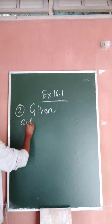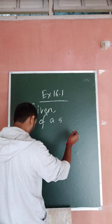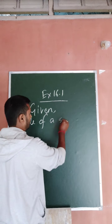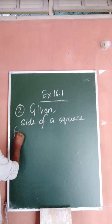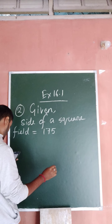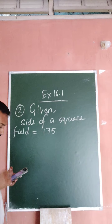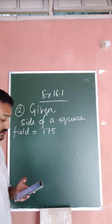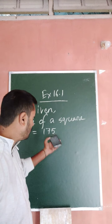Given: side of a square field is equal to 175. So the question is about the square field, so that must be 175 meters.